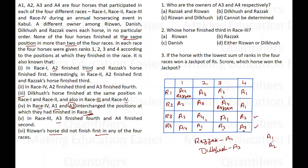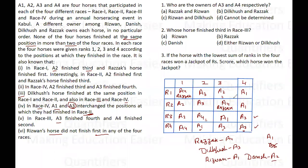The horses left for the first position across all races are a1 and a2. Since a2 already has the first position in race 3, a2 cannot be Rizwan's horse. So Rizwan's horse is a1, and Danish's horse is a2.